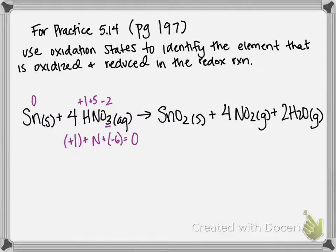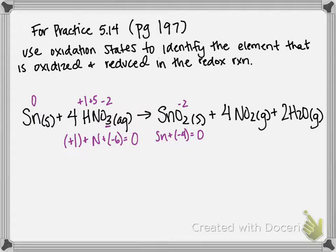We have tin oxide (SnO2). Oxygen in compounds is typically -2, and since we have two of them, they contribute -4. So whatever oxidation state tin has plus -4 gives zero, which means tin has a +4 oxidation state.